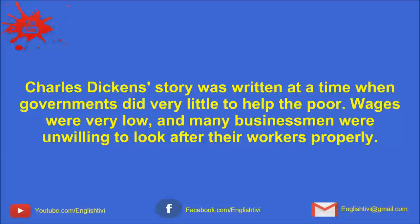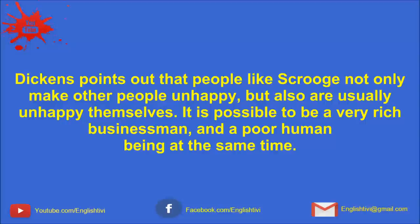Charles Dickens' story was written at a time when governments did very little to help the poor. Wages were very low, and many businessmen were unwilling to look after their workers properly. Dickens points out that people like Scrooge not only make other people unhappy, but also are usually unhappy themselves. It is possible to be a very rich businessman and a poor human being at the same time.